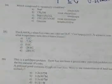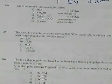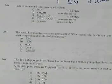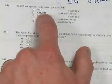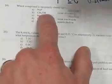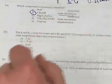Number 24: which compound is incorrectly classified? CH₃OH is listed as a weak electrolyte, but it is actually a non-electrolyte. Everything else is classified correctly.